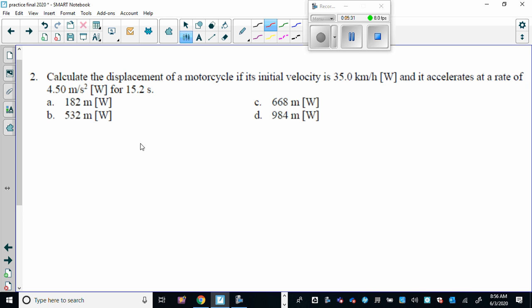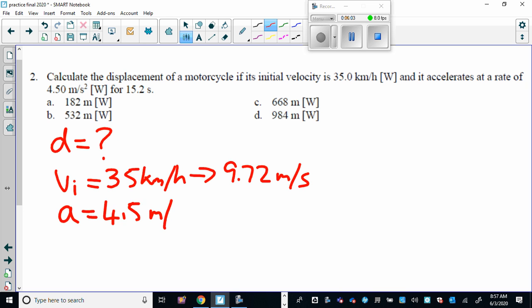Calculate the displacement of a motorcycle if its initial velocity is 35 kilometers per hour, which we're going to convert to meters per second. So divided by 3.6, that turns out to be 9.72 meters per second. And it accelerates at a rate, so the rate of acceleration is 4.5 meters per second squared for 15.2 seconds.